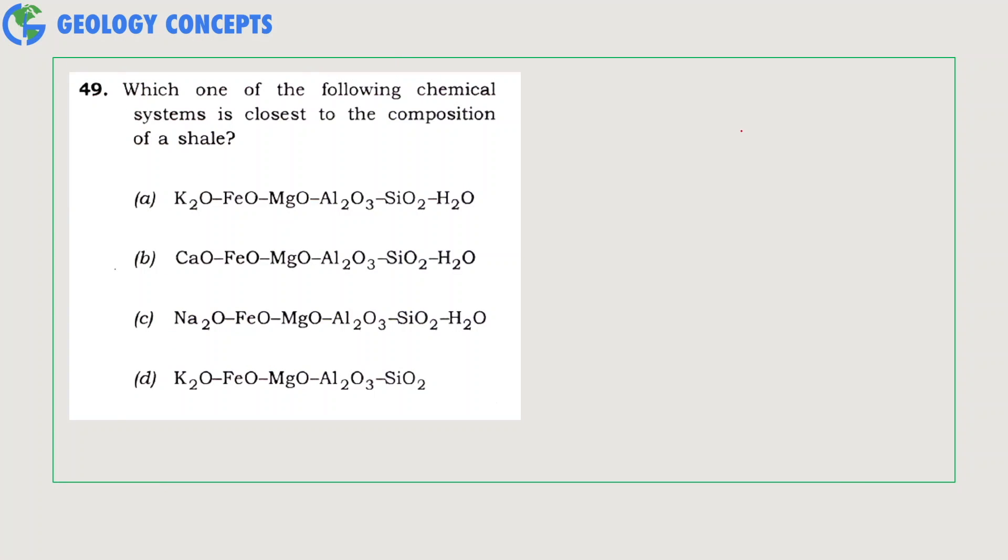Now let's look at questions from metamorphic petrology. Which one of the following chemical system is closest to the composition of shale? As you may have known, a typical shale is composed of about 58% clay mineral, 28% quartz, 6% potassium or sodium feldspar, 5% carbonate minerals, and 2% iron oxides. The appropriate option that correctly represents this composition is option A.